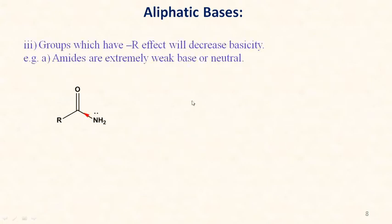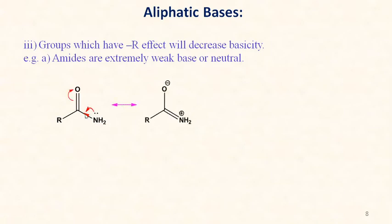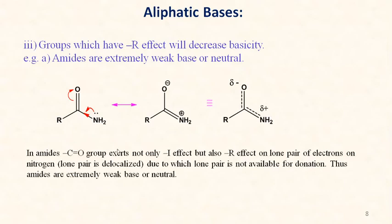Groups with electron-withdrawing resonance effects also decrease basicity. For example, amides are extremely weak bases or neutral, because the carbonyl group shows electron-withdrawing inductive as well as electron-withdrawing resonance effects, meaning the lone pair on nitrogen is delocalized and not available for donation.